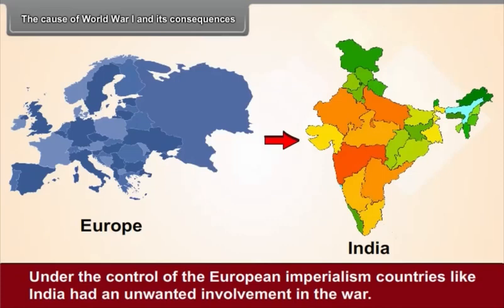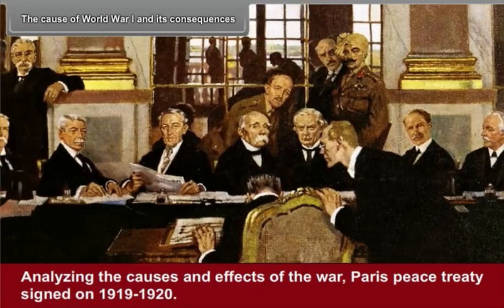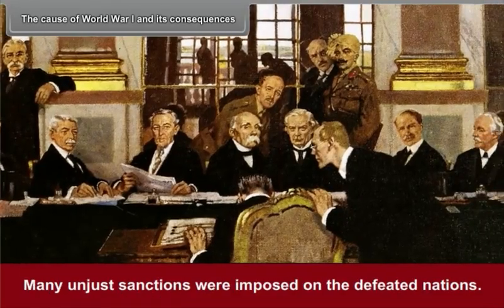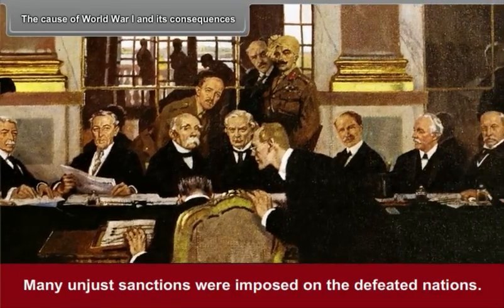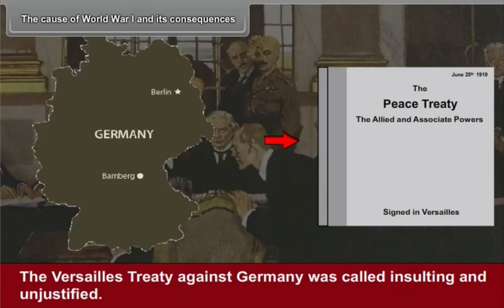Under the control of European imperialism, countries like India had an unwanted involvement in the war. Analyzing the causes and effects of the war, the Paris Peace Treaty was signed in 1919-1920. Many unjust sanctions were imposed on the defeated nations. The Versailles Treaty against Germany was called insulting and unjustified.